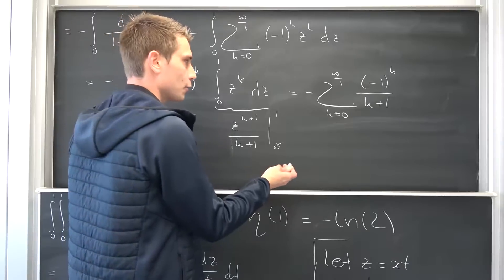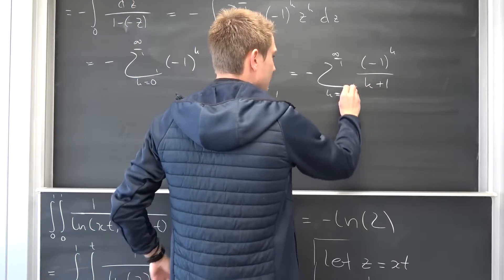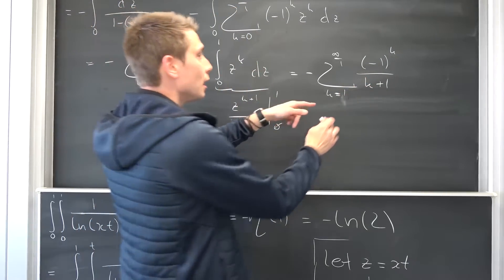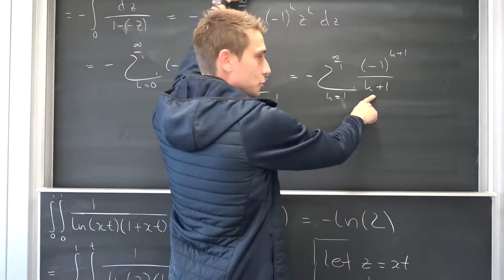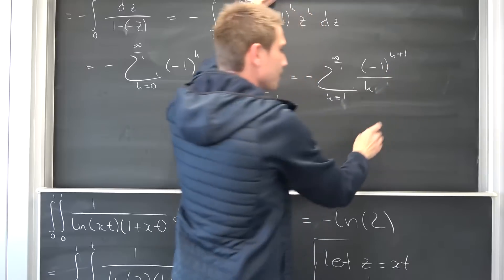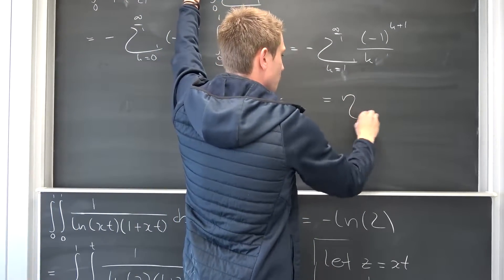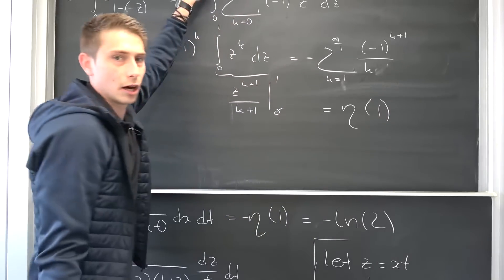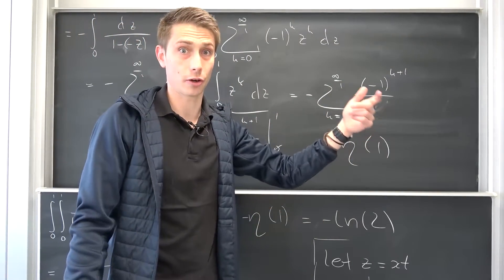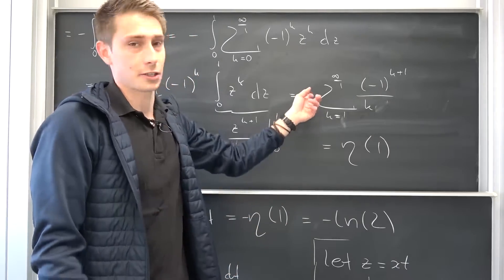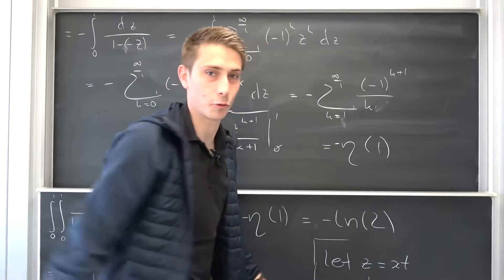Either you see it or you don't, but you can make a little change of index right here, shift the index by 1 to the right, for example, to arrive at k being equal to 1 to infinity of negative 1 to the k plus 1 power, and k plus 1 would be nothing but k in this case. And this thing right here is actually nothing but what we have discovered before, eta of 1. And like discussed in my previous video, this is nothing but the natural log of 2, negative natural log of 2, and this is negative eta of 1.